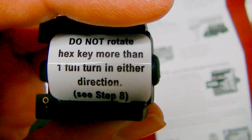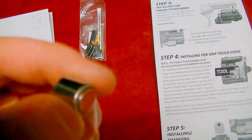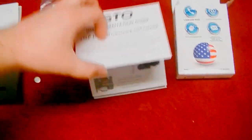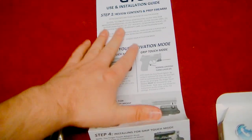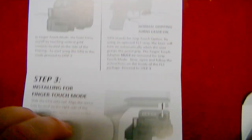There's a warning in here: do not rotate hex key more than one full turn either direction, see step eight. So that must be rather important. Here we have the battery that comes with it. And this is really nice - heavy duty stock cardboard, kind of like an accordion type thing. It shows you step by step in really nice pictures and explanations how to actually install this.